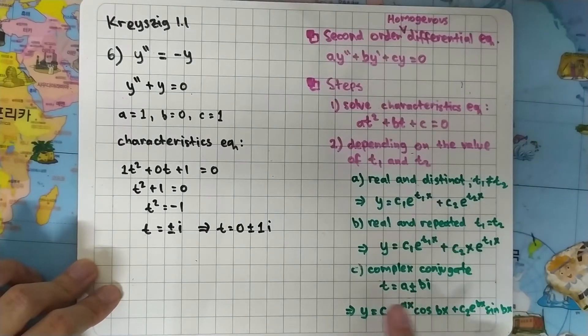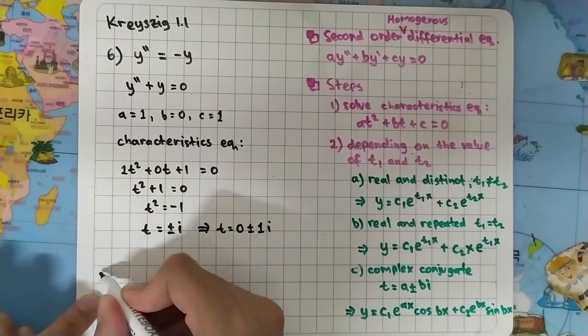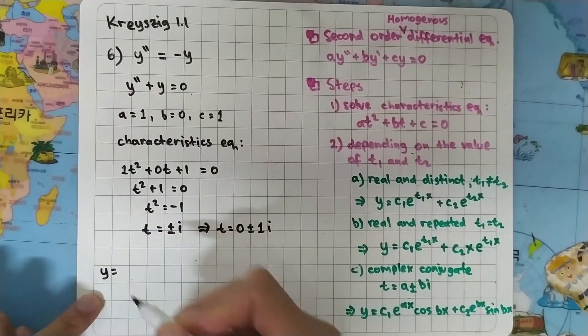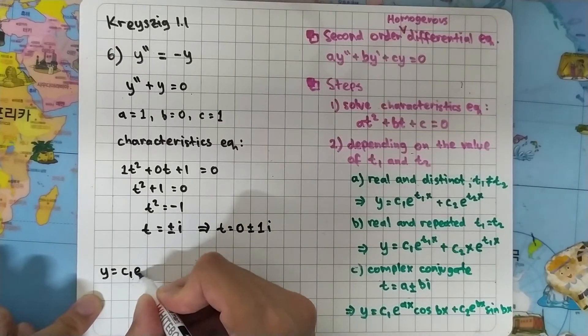So our solution will be y equals C1 times e to the A, where A is zero, times x, times cos B, where B is one, times x.